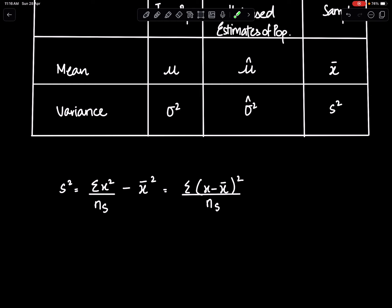There are two formulas for s square. This is the first formula: sigma x square upon ns minus mean square.